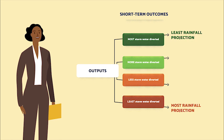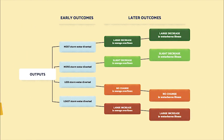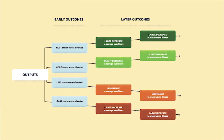The logic model expands with a bracket labeled outputs on the left. The boxes read: most stormwater diverted, more stormwater diverted, less stormwater diverted, and least stormwater diverted. An arrow from the top box points to 'least rainfall projection' and an arrow from the bottom box points to 'most rainfall projection.' This helps explain how all outcomes in the logic model, especially health outcomes, may be affected by different rainfall levels.